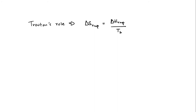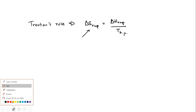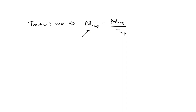So we're talking about liquids basically. Trouton's Rule is saying that for most liquids, the delta S of vaporization is actually around approximately 88 joules per mole.